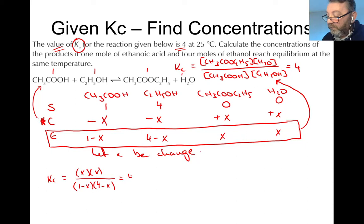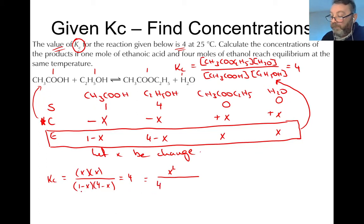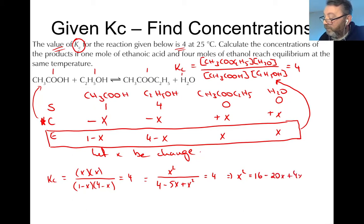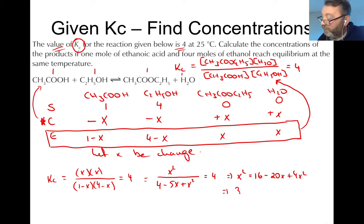That equals 4. On the top we get X squared; on the bottom, multiplying out the two brackets gives 4 minus 5X plus X squared. Clearing fractions — multiply both sides by (4 minus 5X plus X squared) — gives X squared equals 16 minus 20X plus 4X squared. Rearranging so the equation equals zero: 3X² minus 20X plus 16 equals 0. That's the quadratic to take into the minus-B formula.